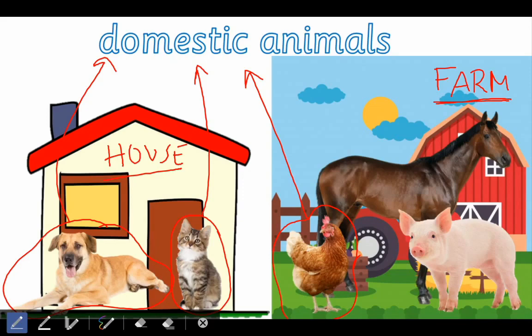Remember: if they live in a house or on a farm, they are domestic. Look at this horse — it lives on the farm, so is it domestic or wild? Excellent, it's a domestic animal. Superb.